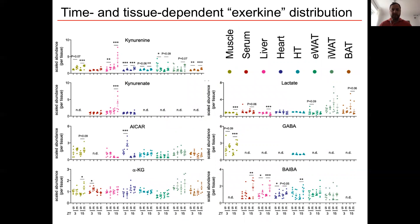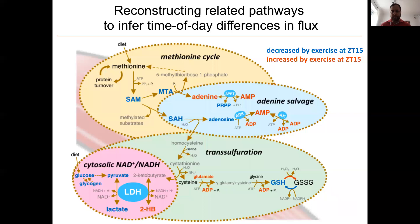Our data also provide important physiological context about time- and tissue-dependent exerkine production — metabolite signaling molecules for organ crosstalk produced and released by tissues in response to exercise. Among established exerkines, most showed a greater exercise response at ZT15 than at ZT3, especially liver kynurenine and kynurenate. On the other hand, ICAR was selectively increased by exercise in the heart at ZT3, as was serum alpha-ketoglutarate. When we stratify metabolite levels and correlations according to tissue, condition, and time, we can begin reconstructing these complex dynamic relationships across related metabolic pathways.